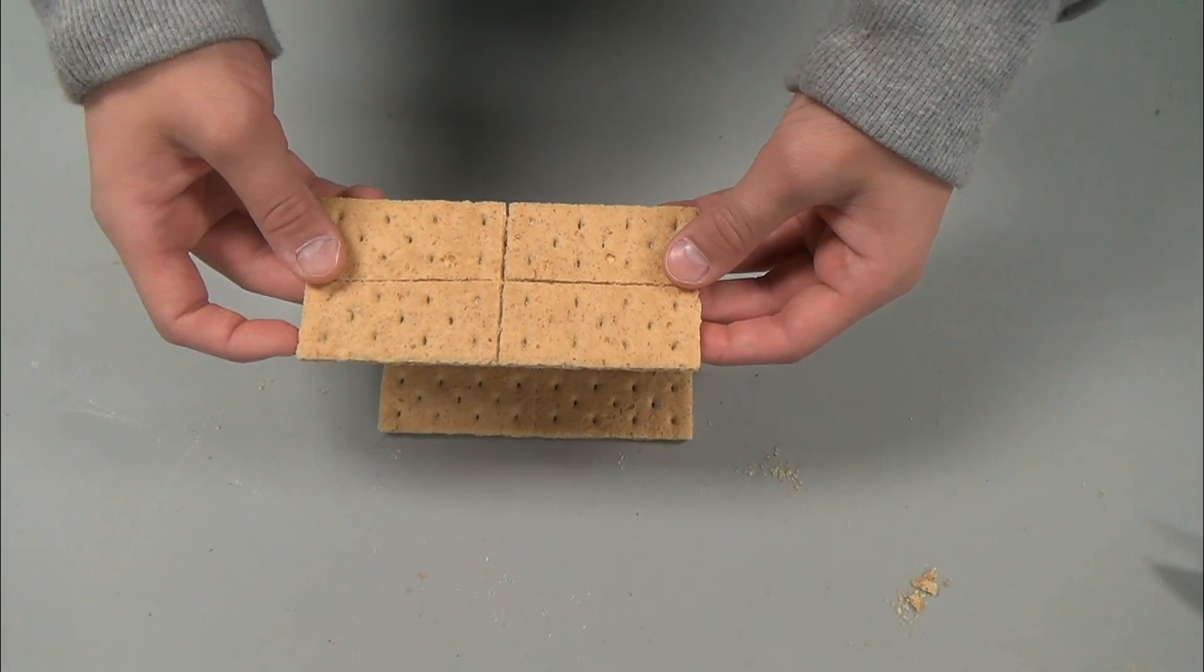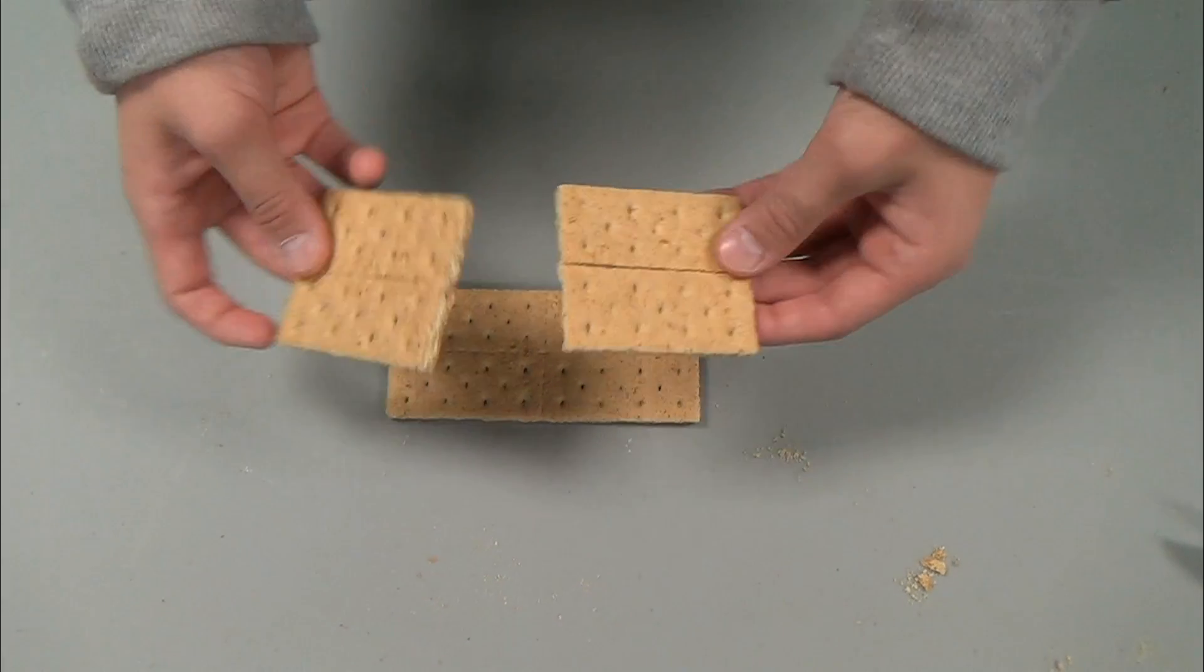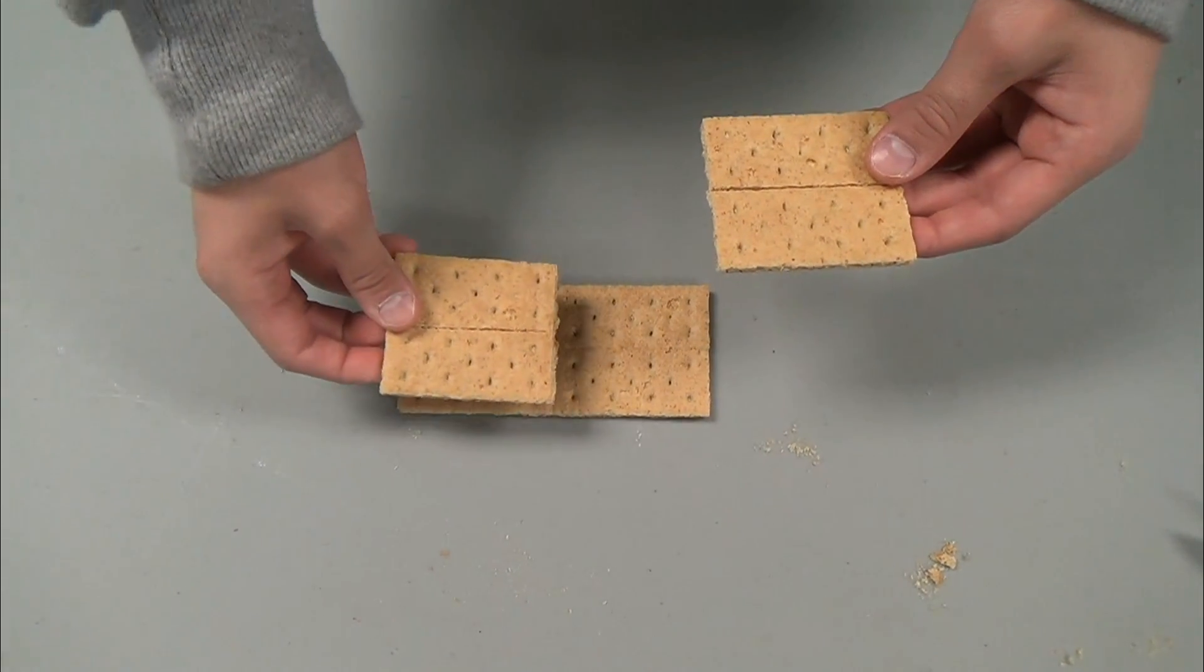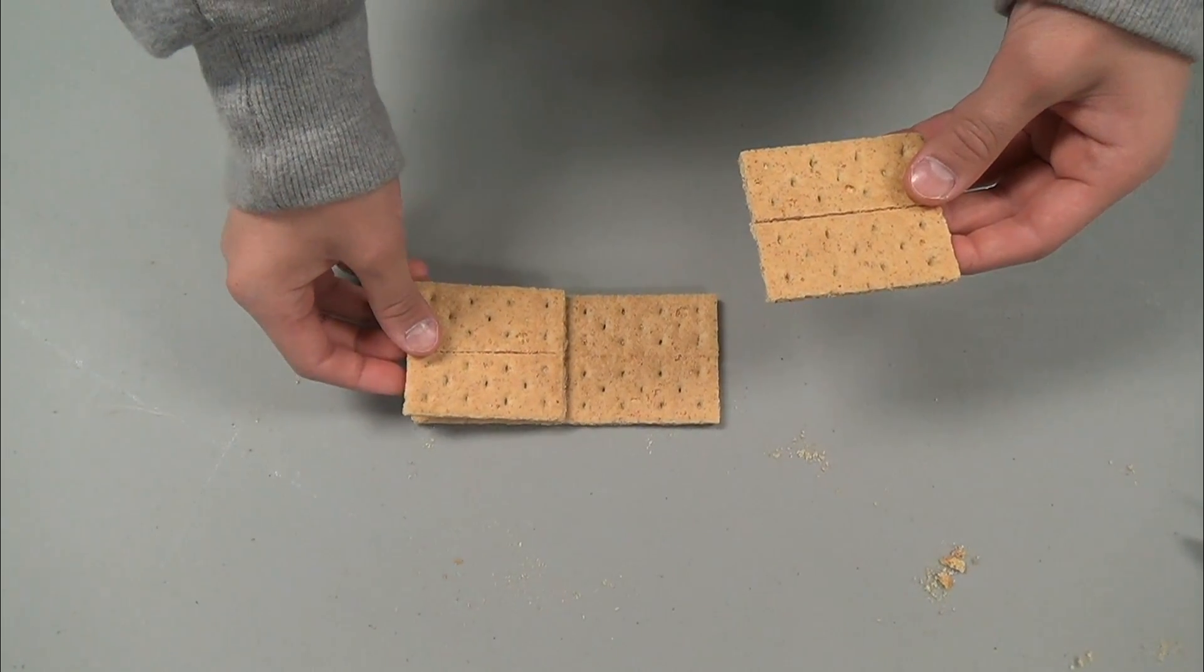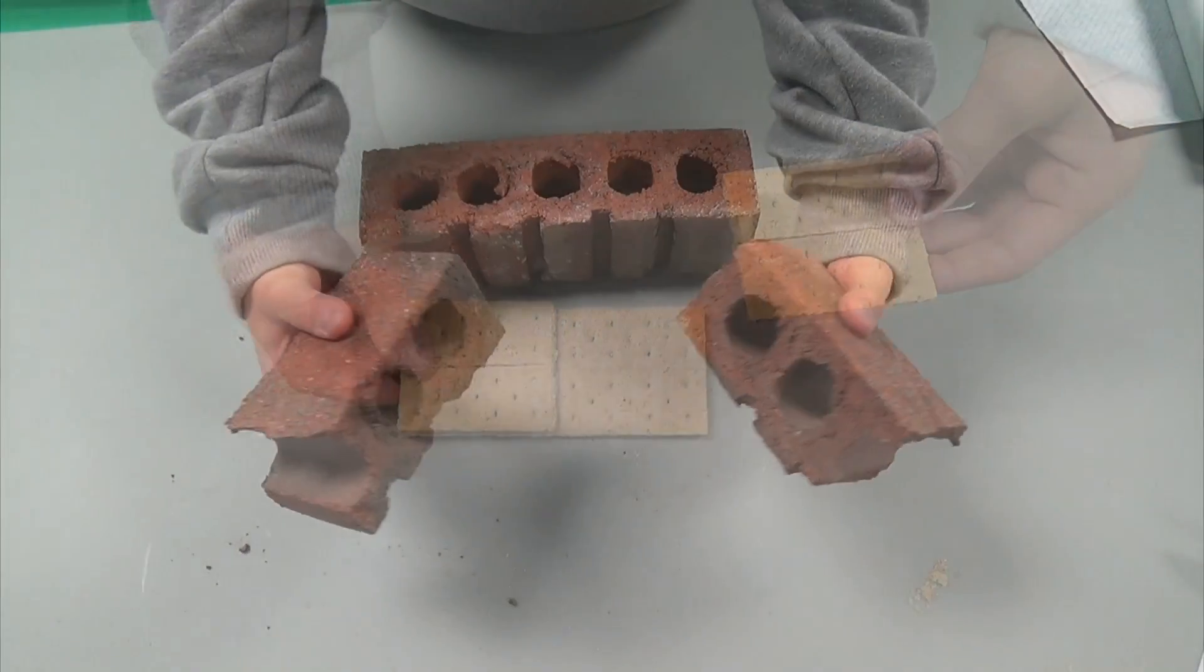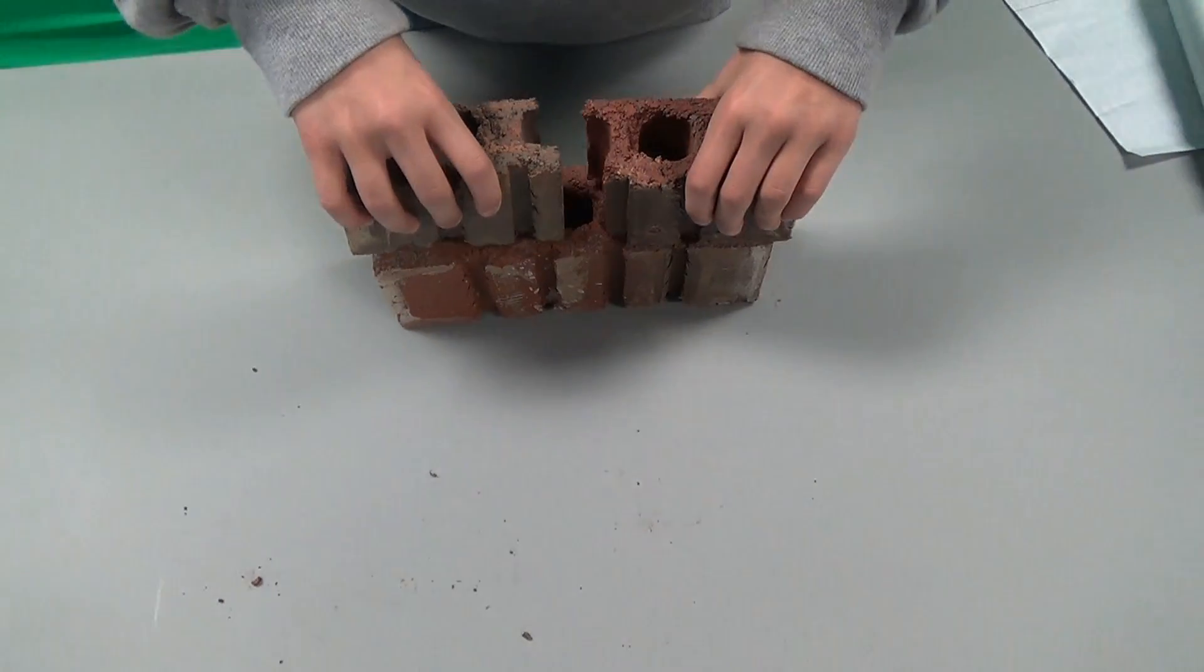If one whole object is split into equal fractions, both fractions are one half of the whole. You can have one half of a graham cracker, one half of a piece of paper, one half of a brick, and even one half of a peppermint.